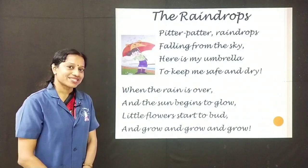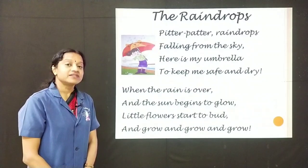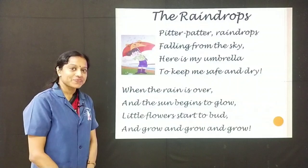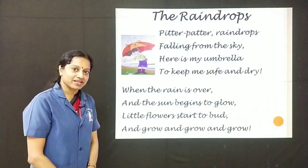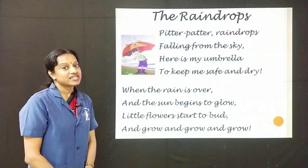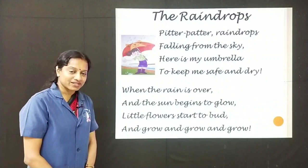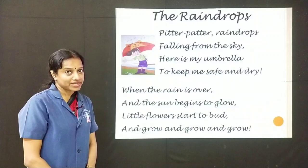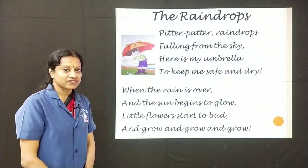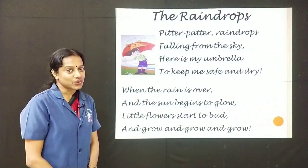The Raindrops. Pitter patter, raindrops falling from the sky. Here is my umbrella to keep me safe and dry. When the rain is over and the sun begins to glow, little flowers start to bud and grow and grow and grow.